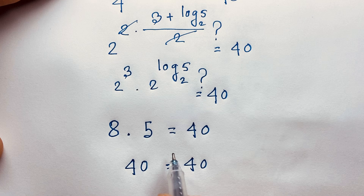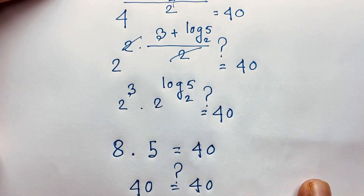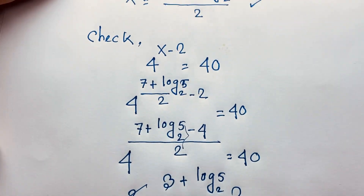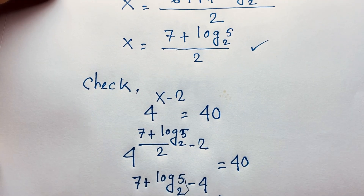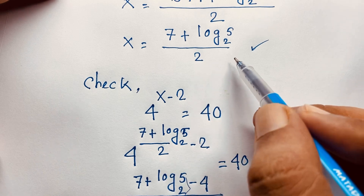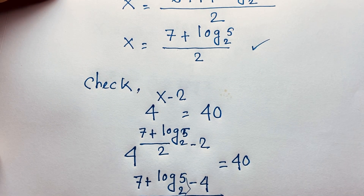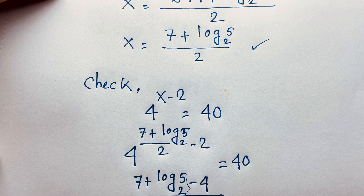Left-hand side equals right-hand side, so x equals 7 plus log 5 base 2 over 2 is our final answer in this exponential math Olympiad question. Thank you all. If you enjoyed this question, please subscribe to my channel for more interesting videos. Goodbye, take care everyone.